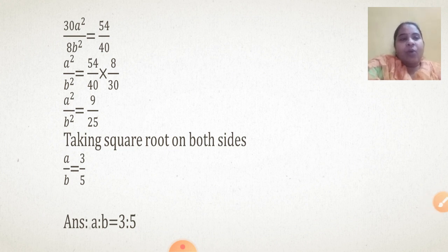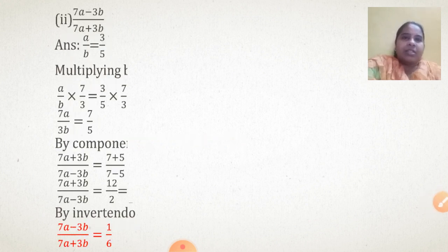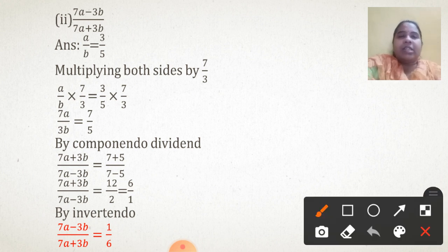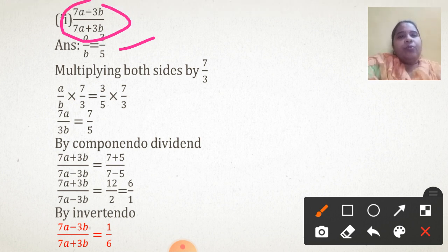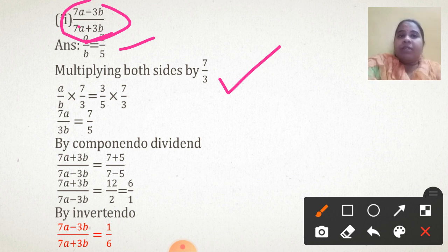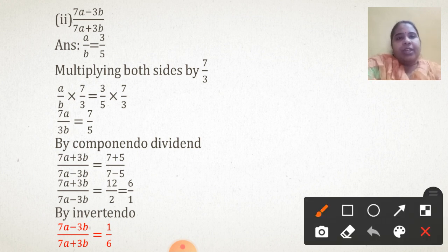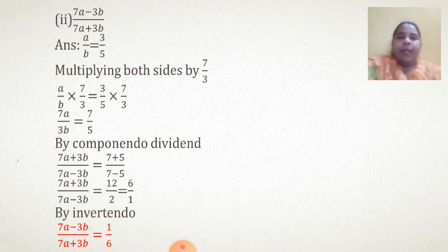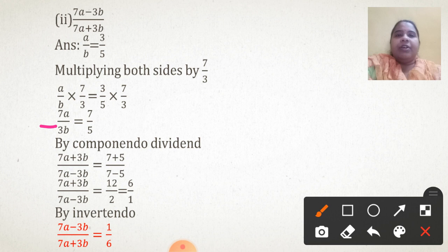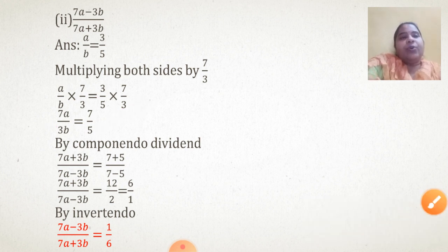Now using this ratio a upon b as 3 upon 5, we will solve the remaining sub-questions. The second sub-question asks for 7a minus 3b upon 7a plus 3b. Since a upon b is 3 upon 5, I will multiply both sides by 7 upon 3 to get the coefficient 7 on a and 3 on b. So 7 times a gives 7a, 3 times b gives 3b, and the 3s cancel on the right side, giving 7 upon 5.